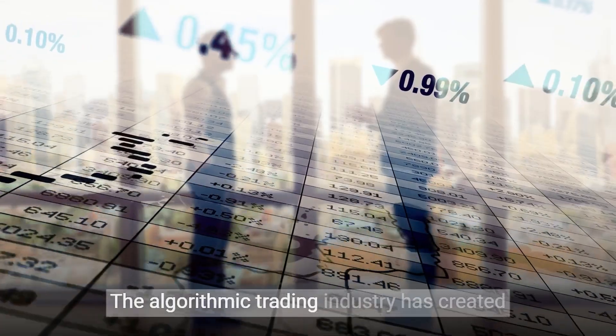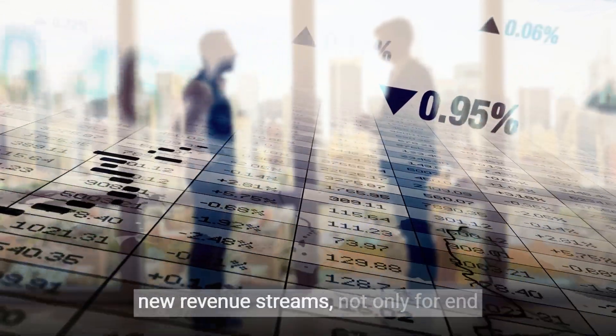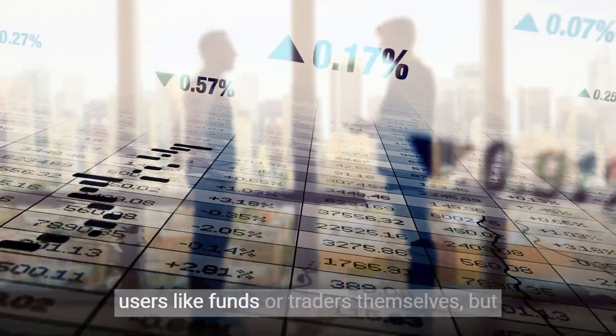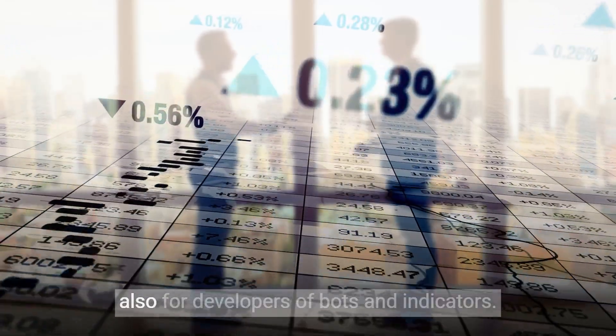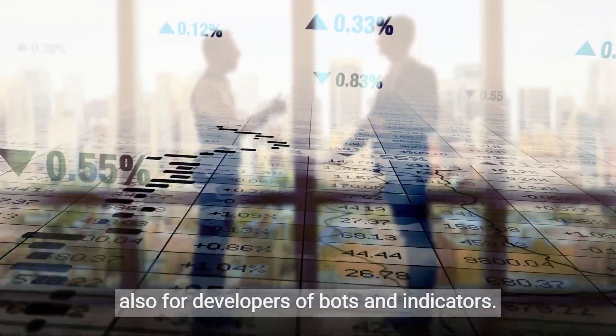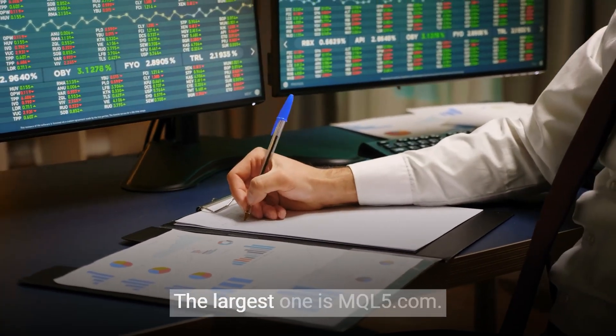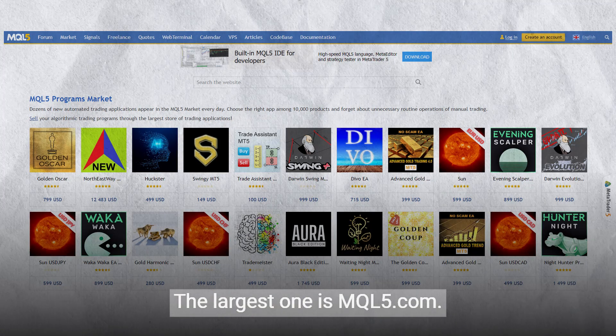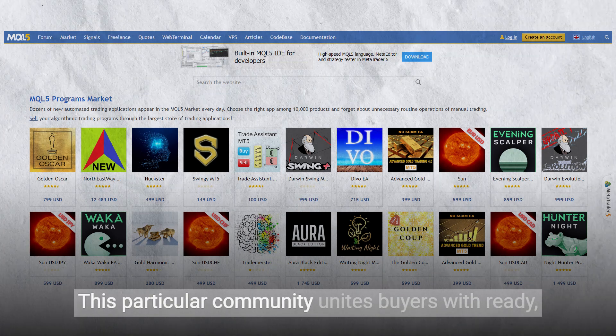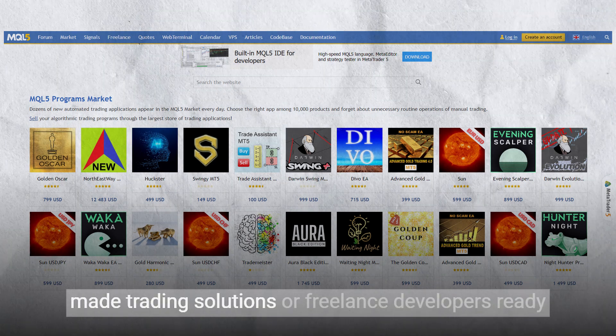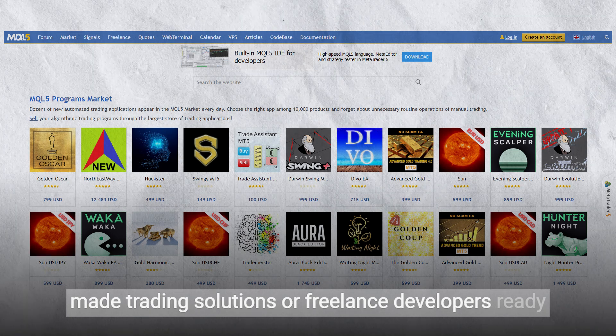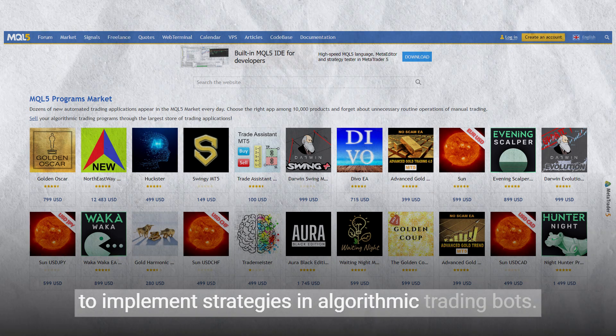The algorithmic trading industry has created new revenue streams not only for end users like funds or traders themselves, but also for developers of bots and indicators. In this way, developers tend to unite communities of interest. The largest one is mqlfod.com. This particular community unites buyers with ready-made trading solutions or freelance developers ready to implement strategies in algorithmic trading bonds.